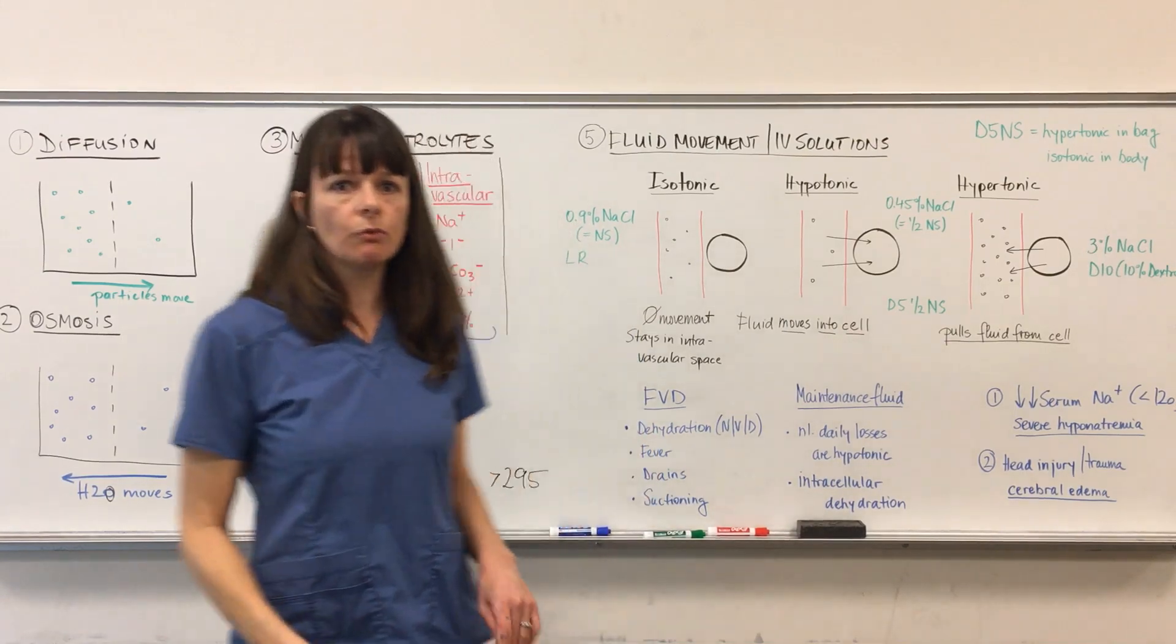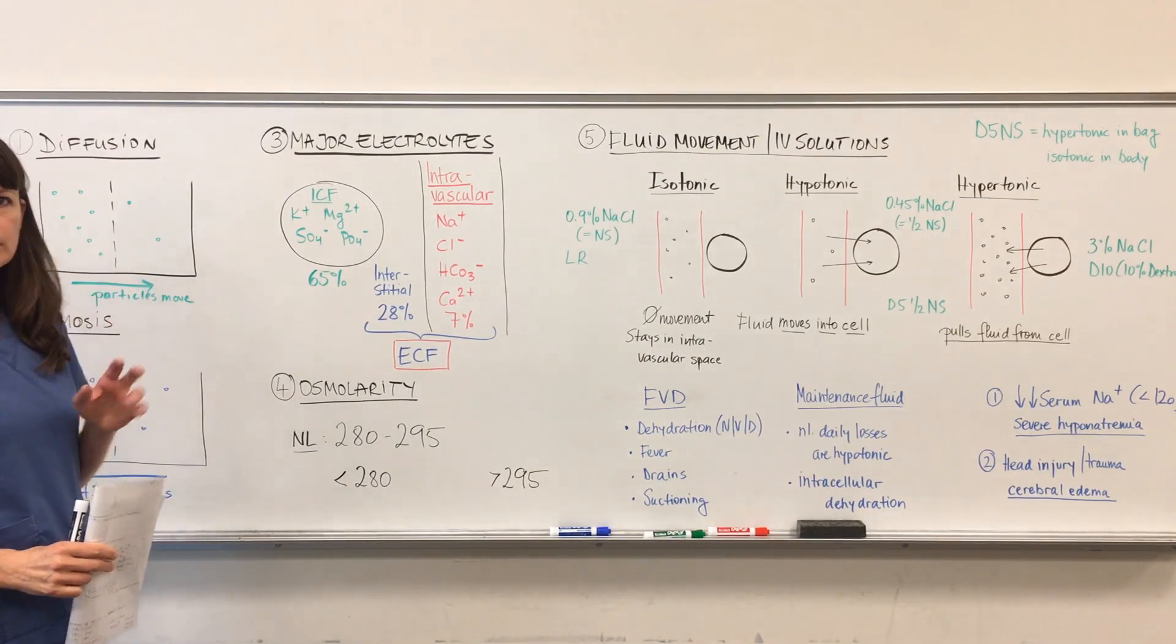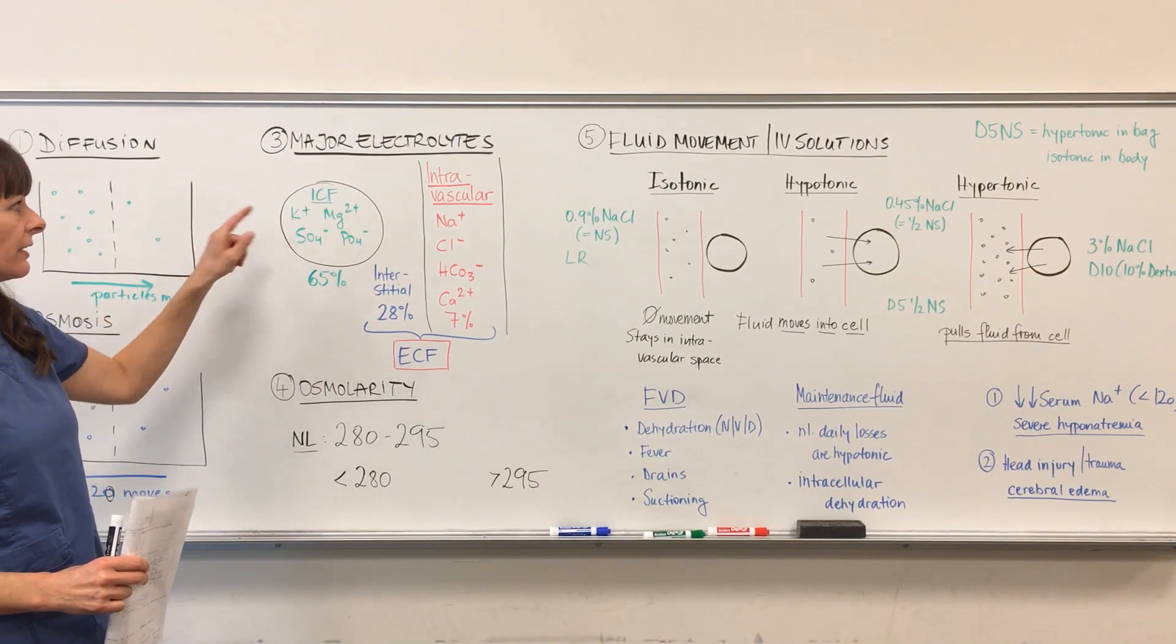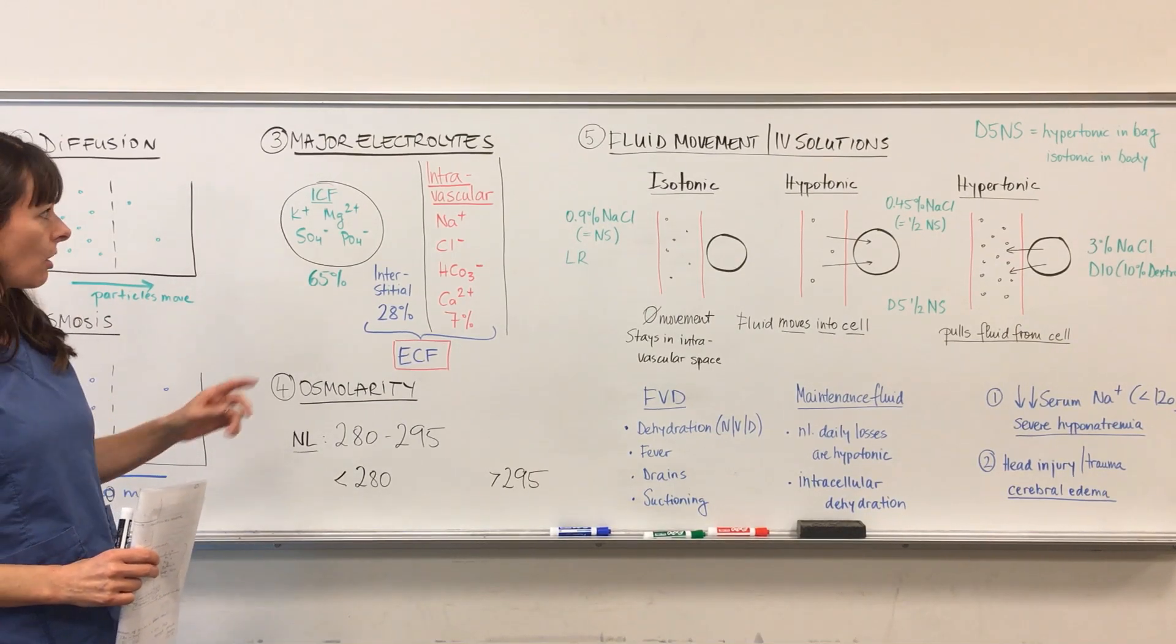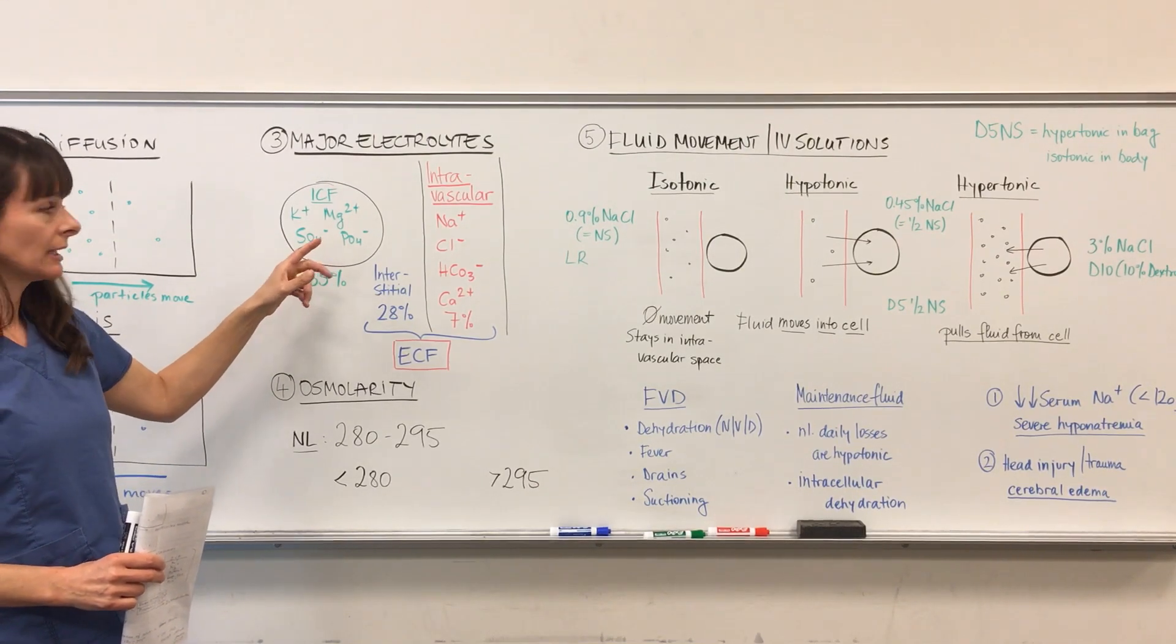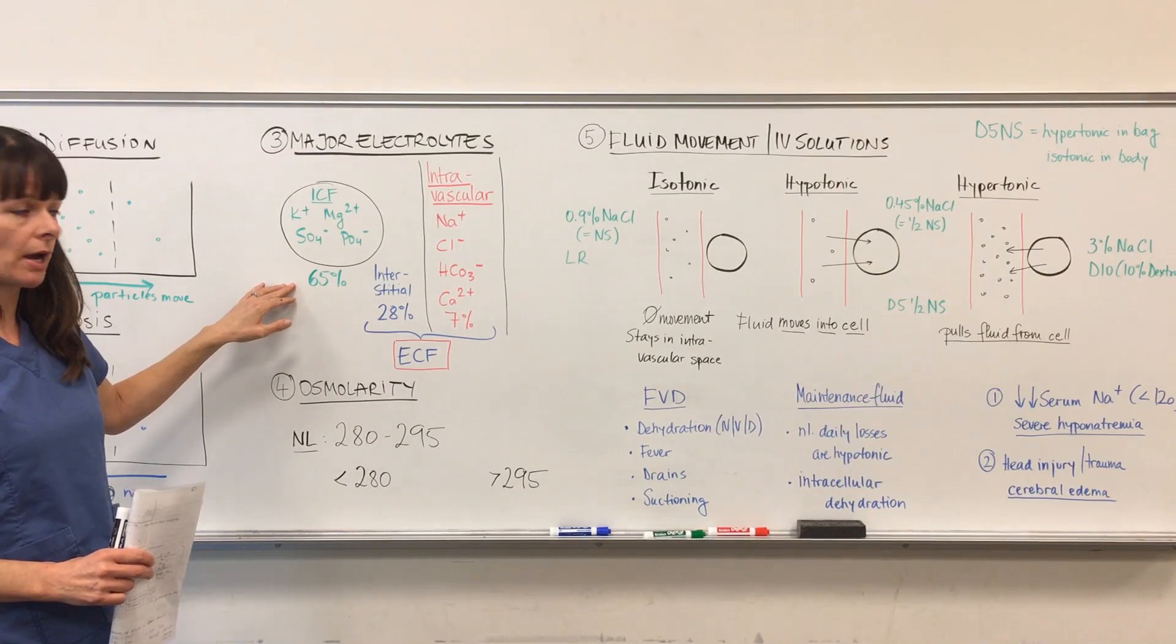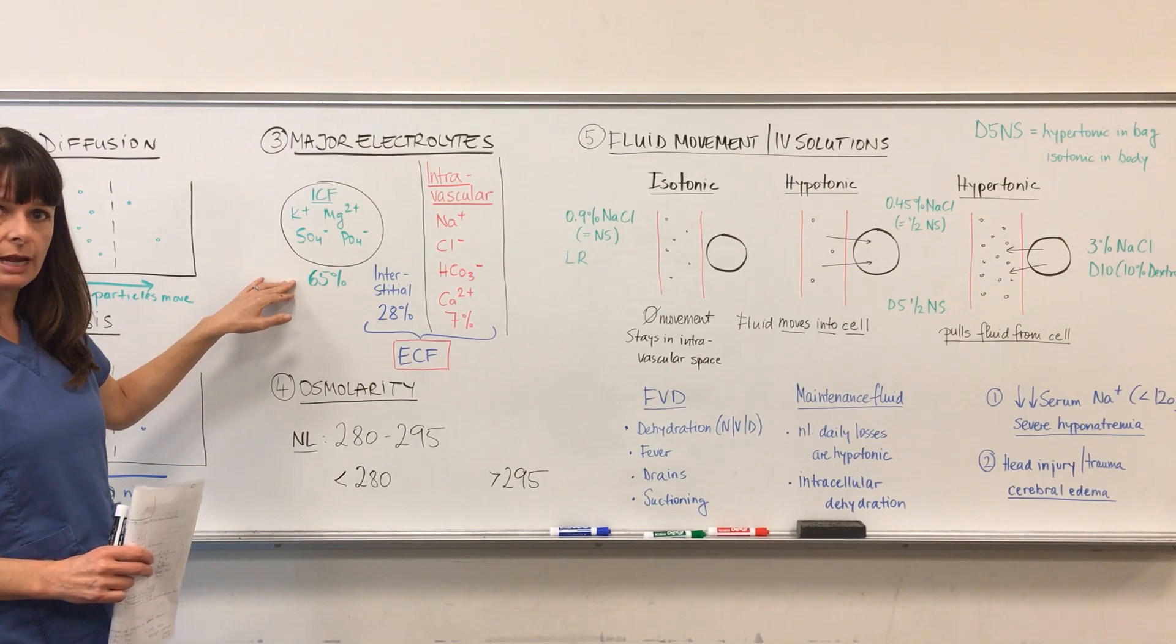Now let's move on to the major electrolytes. So keep in mind there's basically two but really three fluid compartments in the body. First of all, we have our ICF, intracellular fluid. Major intracellular electrolytes are potassium, magnesium, sulfate and phosphorus. Intracellular fluid makes up about 65% of our total water in the body. So there's a large percentage sitting in the cells of these electrolytes and fluids.